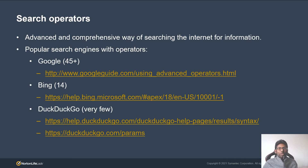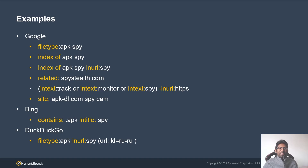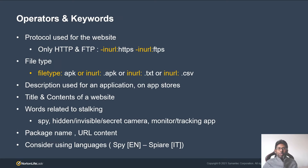Among the popular search engines, Google provides the most number of search operators, followed by Bing. Here are some examples for hunting potential stalkerware applications. What do you need? Search operators and keywords. Consider including protocol details in your search queries. File type can also come in handy — if you are looking for IOCs, you may use CSV or DXD files because they are usually published in those formats. You also need to gather keywords: read application descriptions and package names, and pay careful attention to the title and content of stalkerware vendor websites. Stalkerware apps are also available in multiple languages, so consider using languages in your search queries.